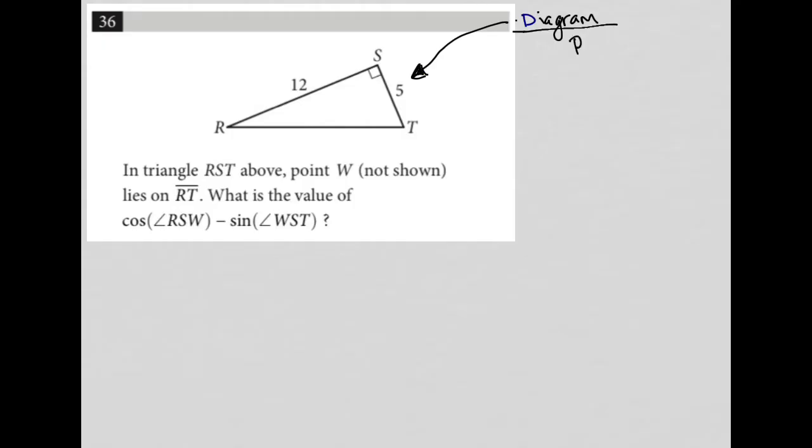More specifically, this is a right triangle. So what do we know about right triangles? We know that they have a right angle, but we also know that there's some special right triangles that we should be aware of, like 3, 4, 5.